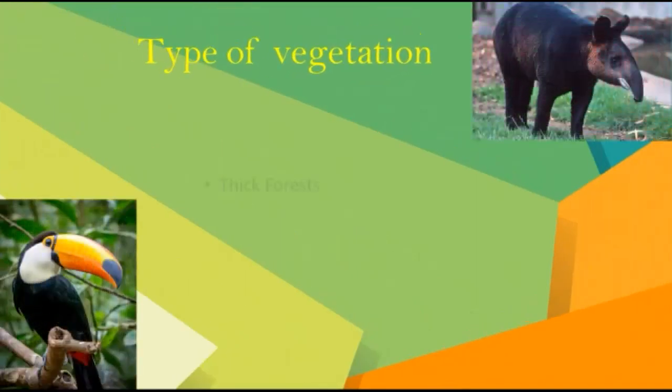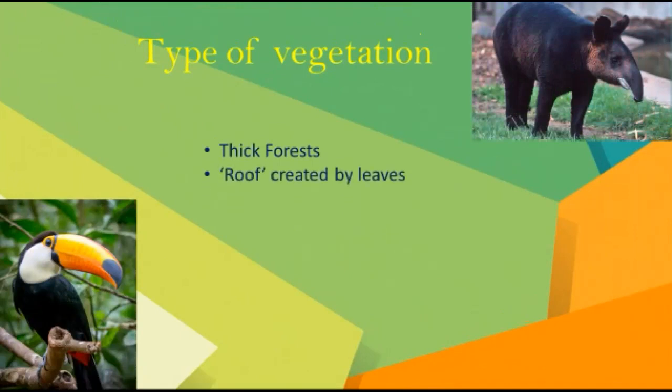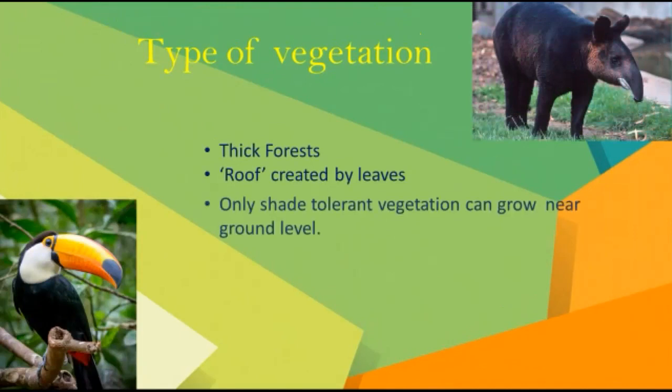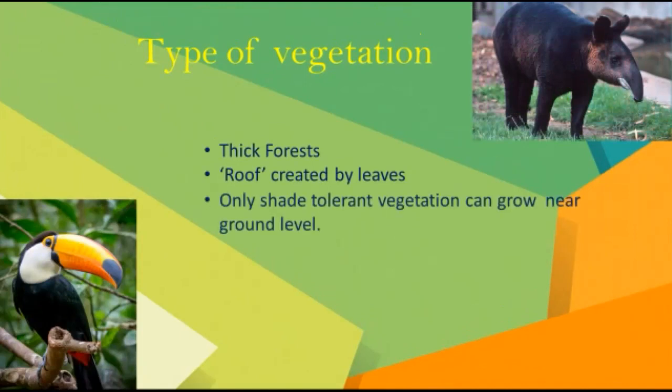As it rains very heavily in this region, there are very thick forests. They are so thick that their leaves form a roof-like structure, and their branches do not allow sunlight to reach the ground. So the ground remains dark, and only shade-tolerant vegetation grows here.